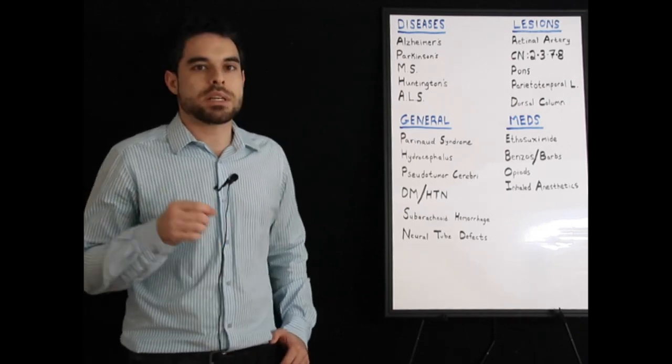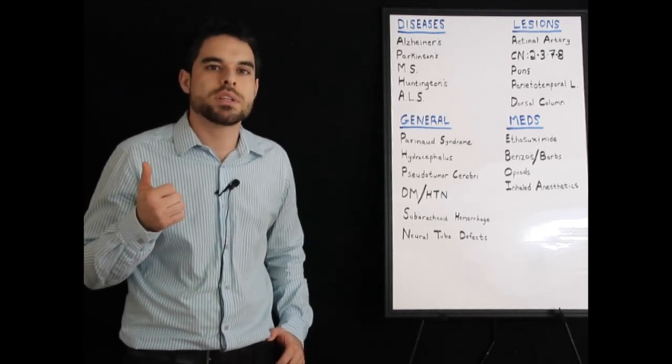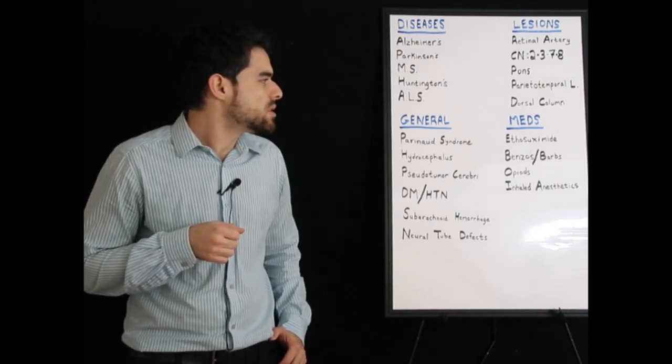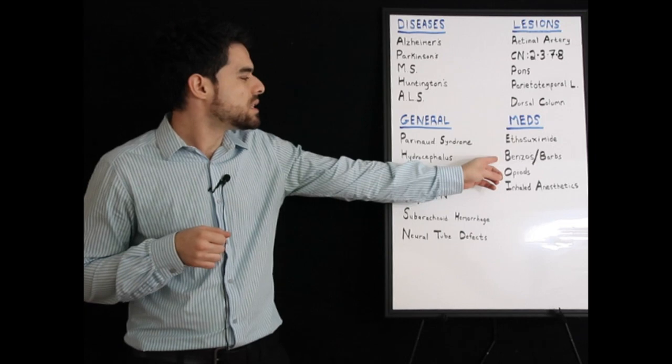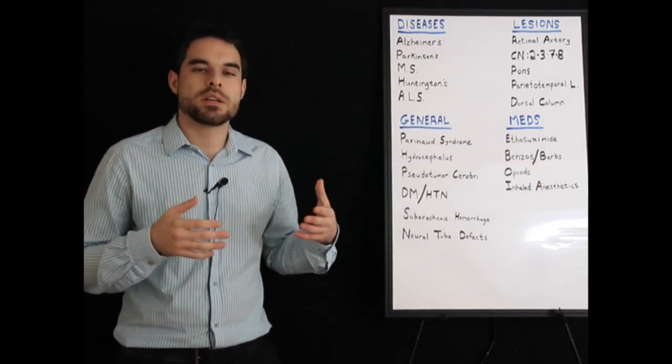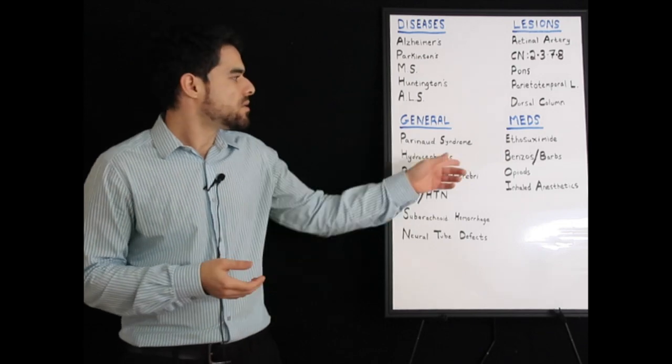Important medications here. Ethosuximide, used for absence seizures. The mechanism of action is it works on the T-type calcium channels. Benzos and barbiturates. Benzos know that increases the frequency. Barbs increase the duration. I remember my friend Ben, so F for Ben, benzos frequency.